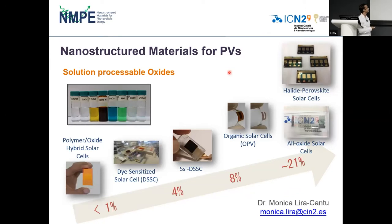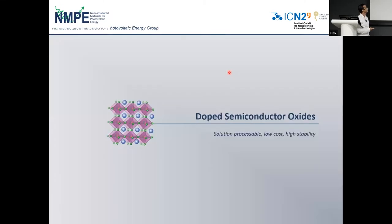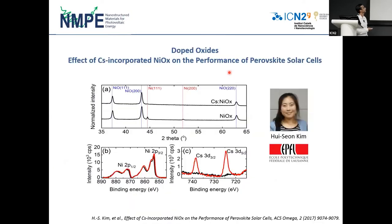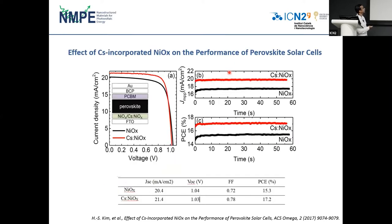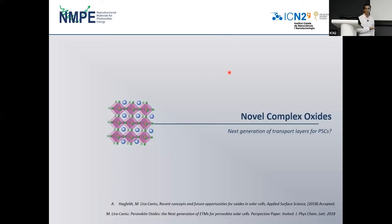There has been a lot of effort in the group on fabrication of solution-processed oxides such as zinc oxide, titanium oxide, zirconium oxide, and nickel oxide, and their application in different types of perovskite solar cells. As an example, they studied cesium-doped nickel oxide as an excellent HTL layer for increasing the current density of the solar cells. The nickel phase was removed after cesium doping, leading to an increase in short-circuit current density and very high stability.